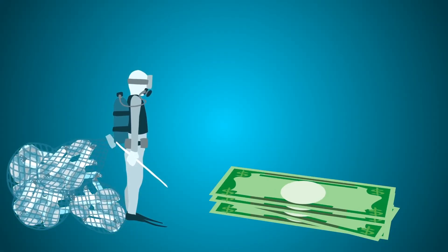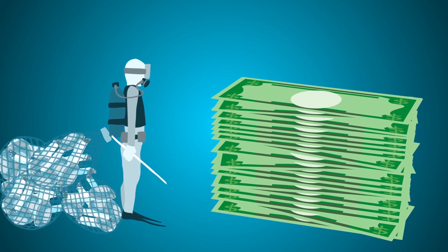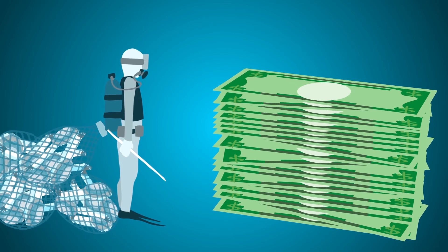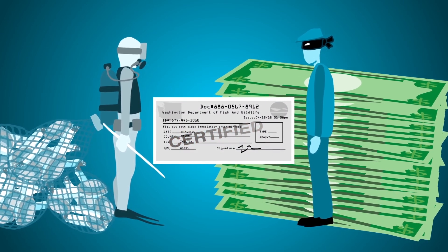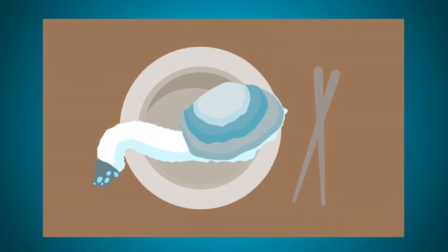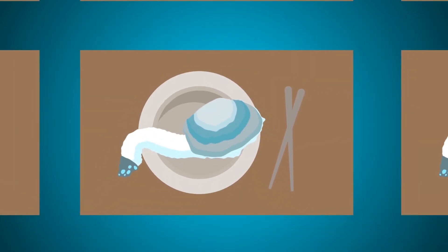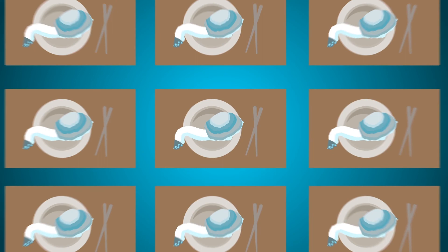A good diver can harvest thousands of dollars worth of geoduck in just a few hours. Then, all they need is a buyer and a fake certification tag. In a matter of hours, boxes of geoduck are headed to Asia, where diners shell out big bucks for them.